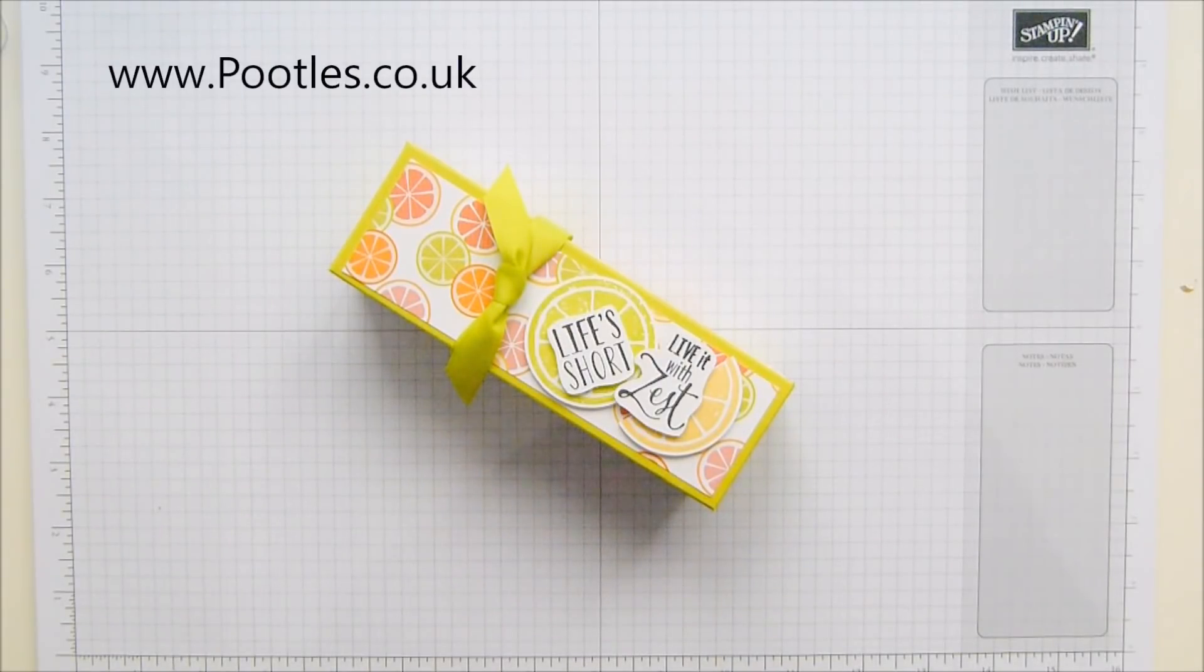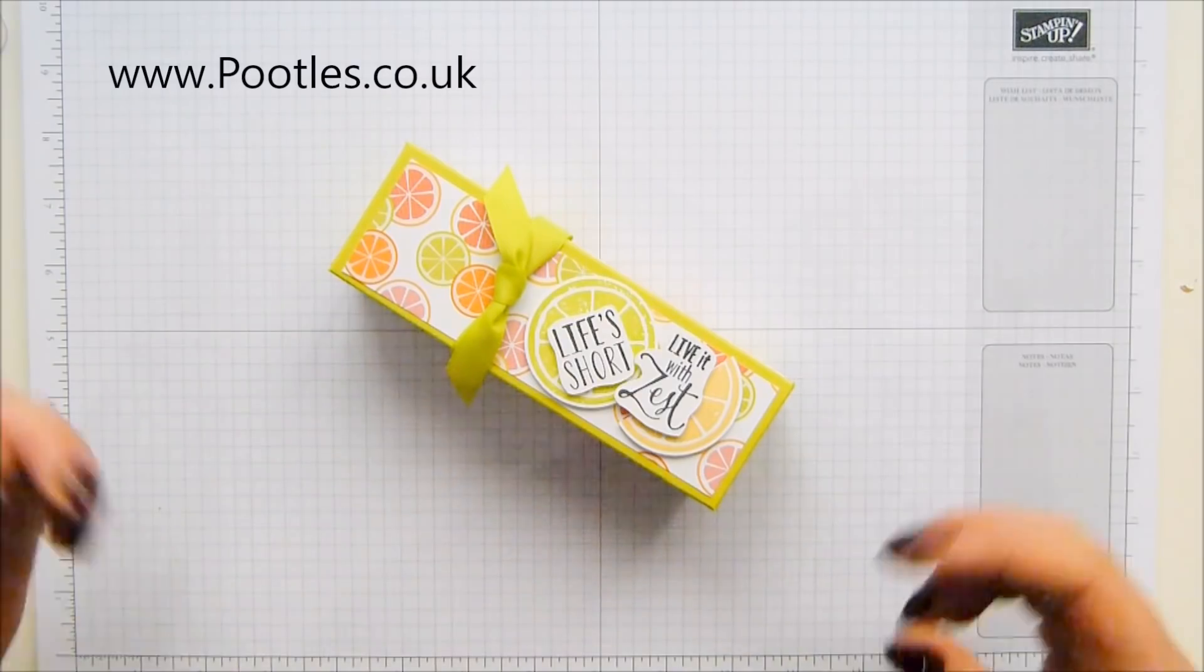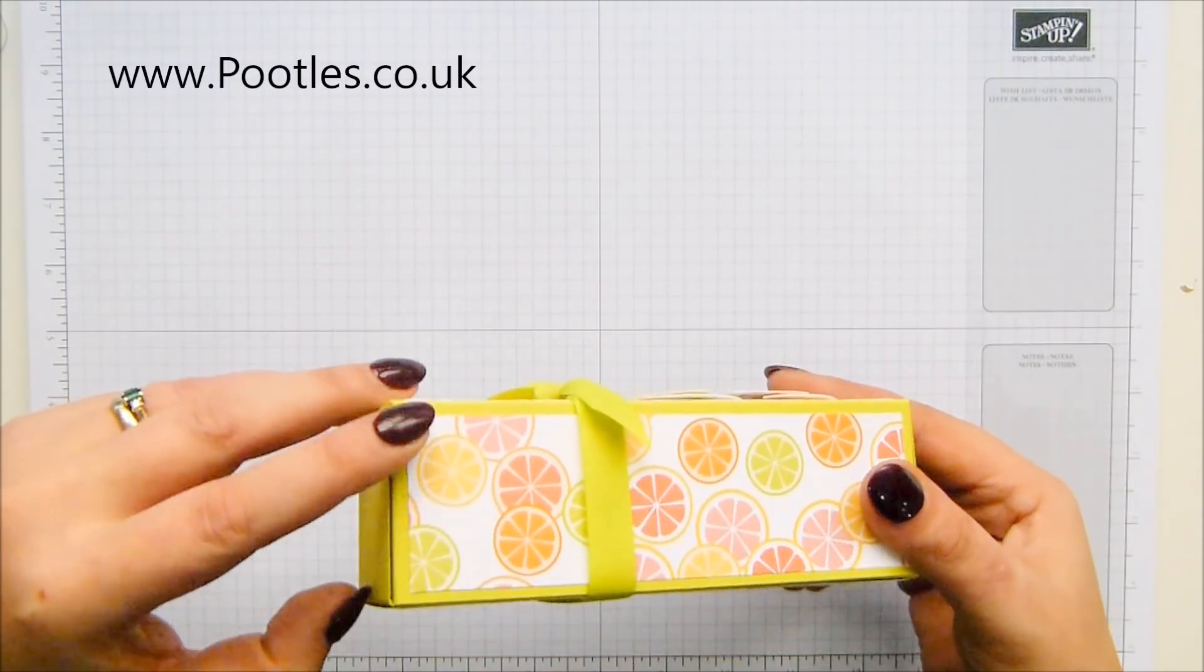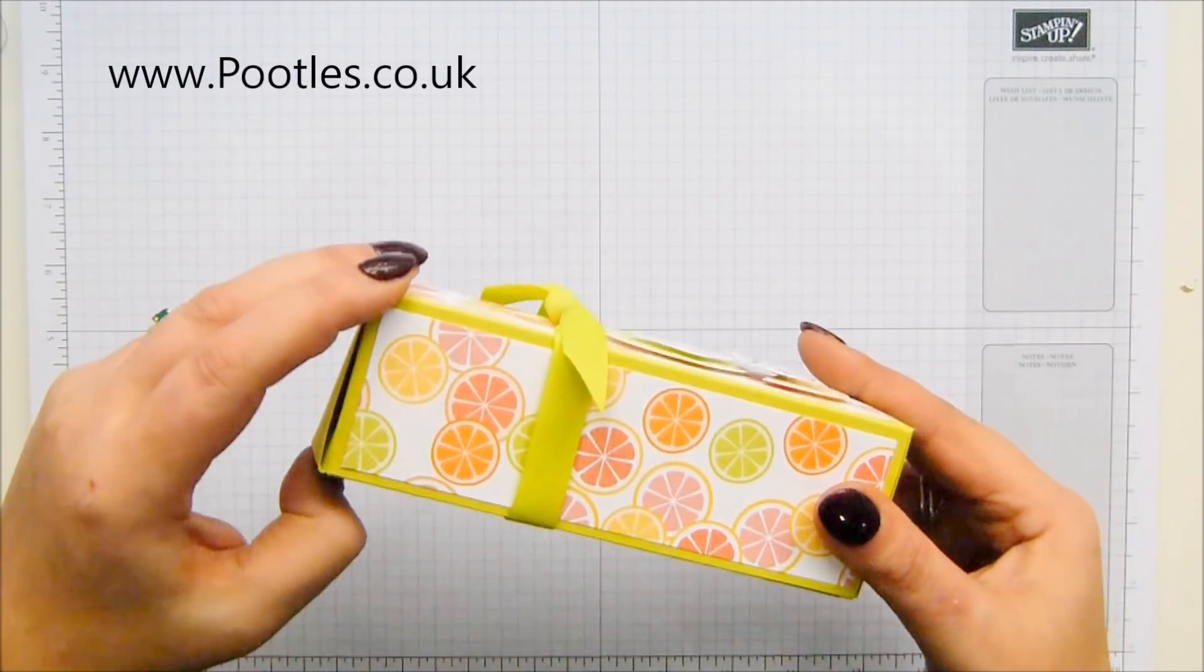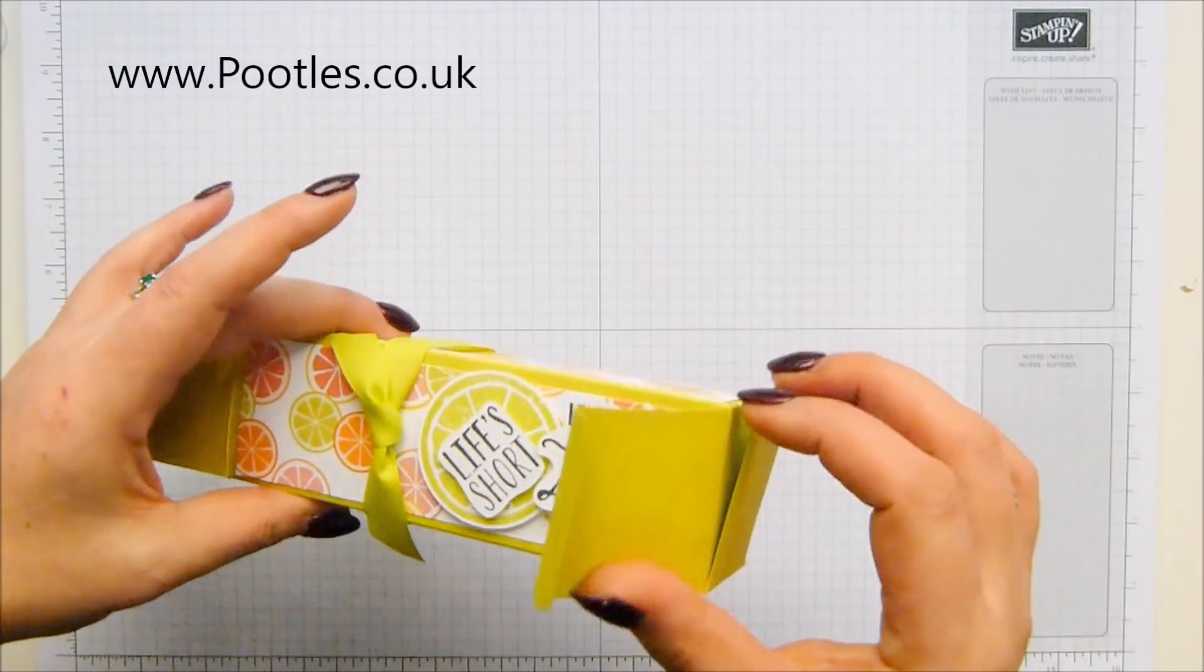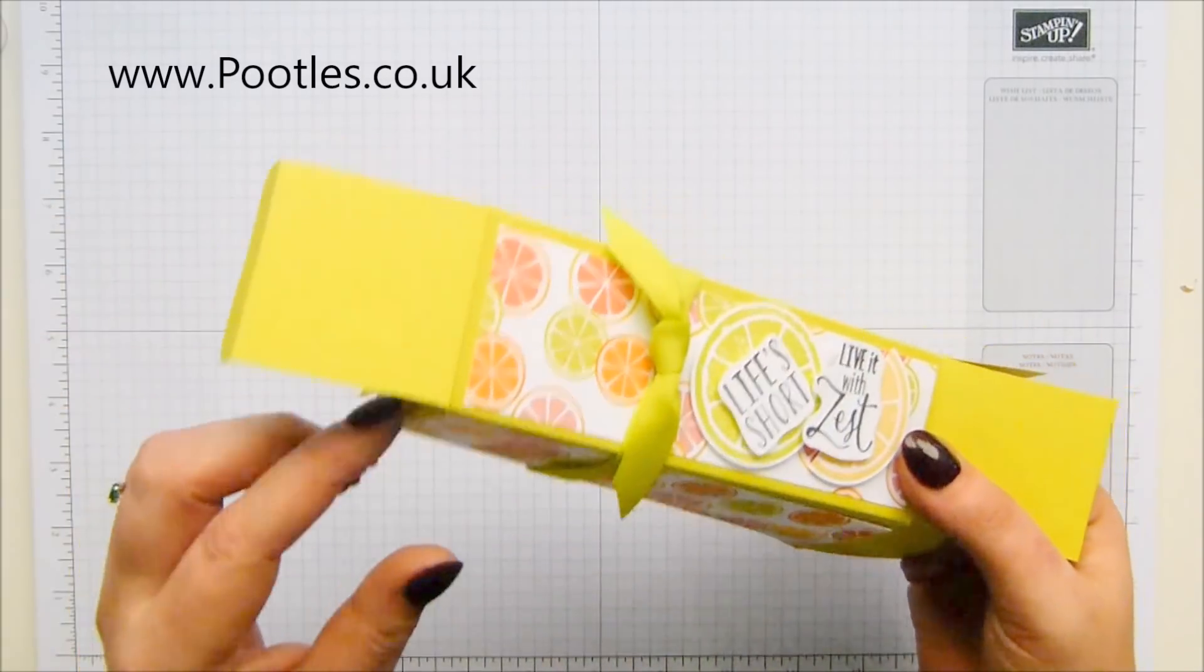Hi there, it's Sam from poodles.co.uk. Thank you very much for joining me today. Today's project is this fold flat, fold flat, fold flat rectangular box, and I will show you how it folds flat. It's absolutely darling. So this is the project we're going to make today.